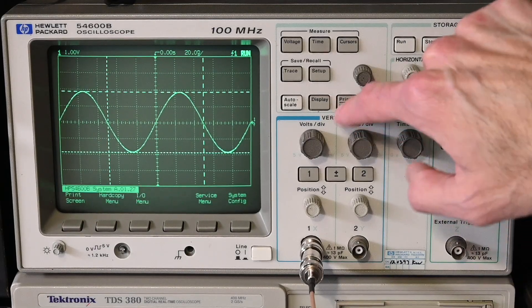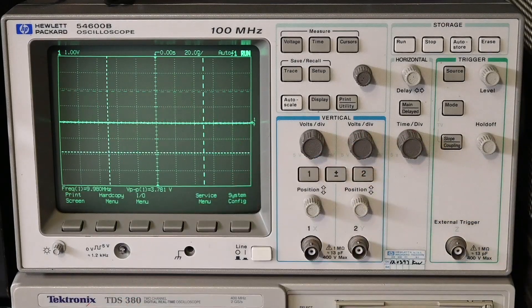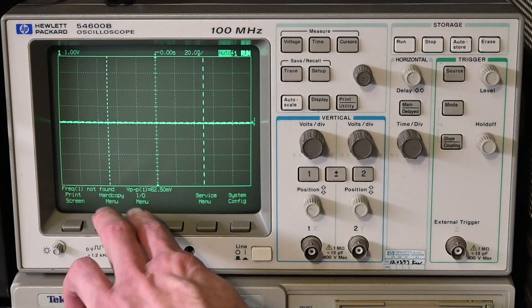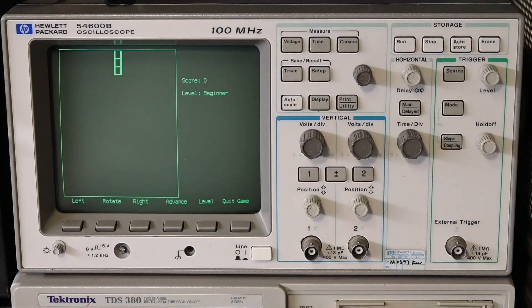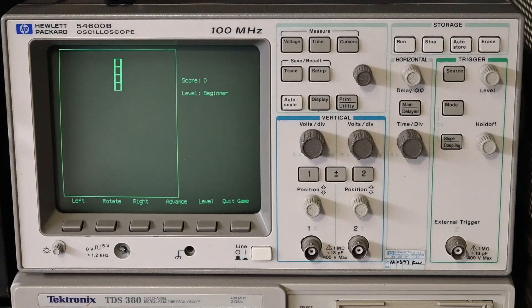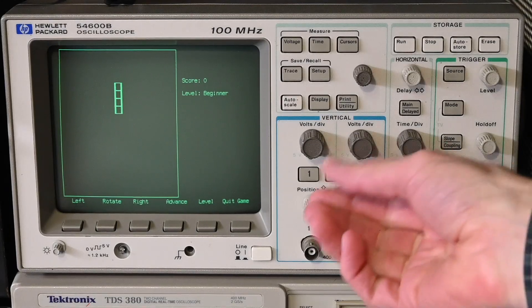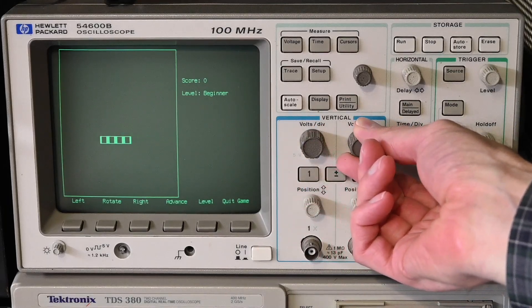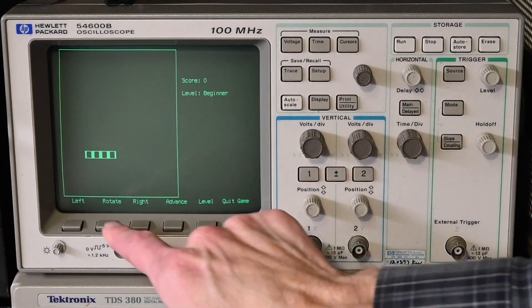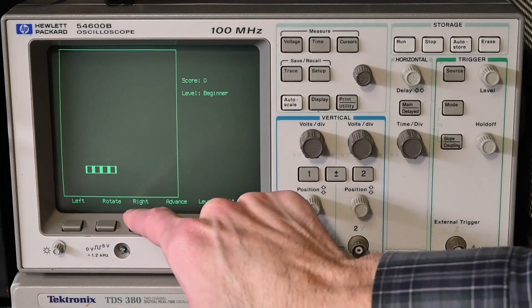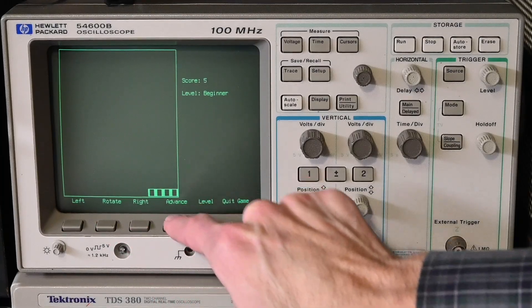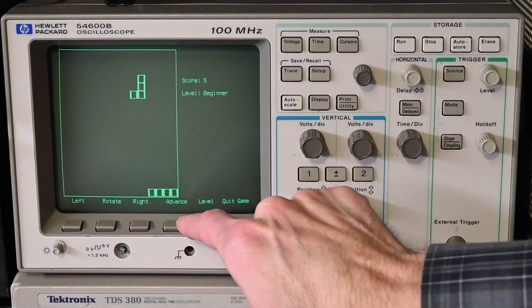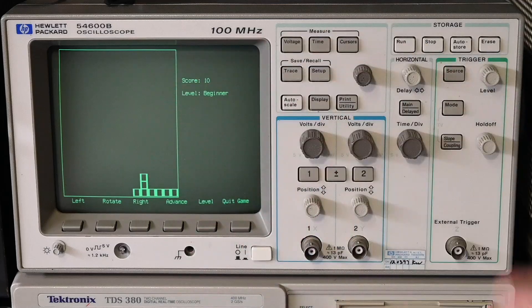As far as the hidden Easter egg that's in this oscilloscope, all you have to do is hit Print Utility. I'm just going to take this cable off here to get out of the way. But once you're in that Print Utility menu right here, you just hit the second and third buttons like so, and we have a classic game of Tetris. How cool is that? Now, you can actually turn this knob right here, and that'll move like so, and then you can go side to side, or you can use Rotate right here, and then you can move right like that, and then if you go like that and hit Advance, it'll drop it down. You can go over here, move this over a little bit, and then you go to Advance. It drops it down quickly.